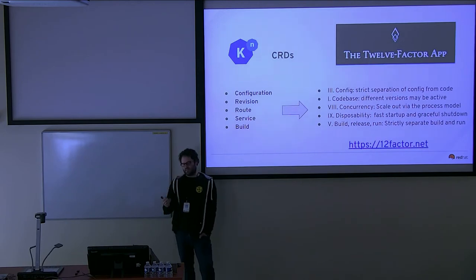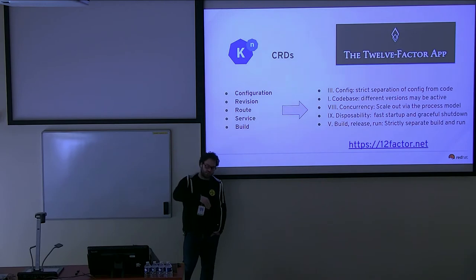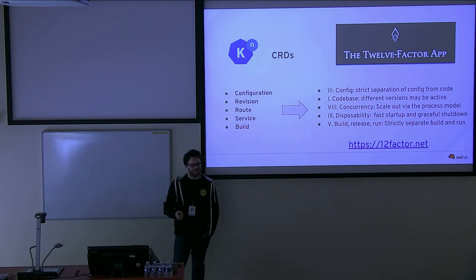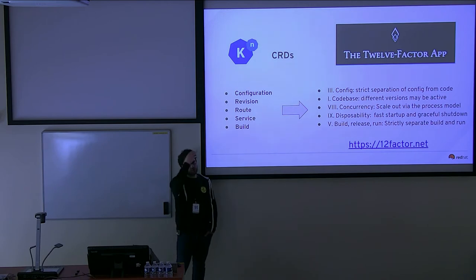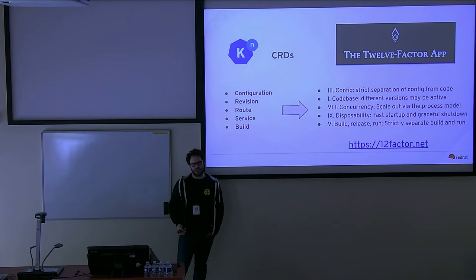What's interesting about all the K-native CRDs is that they map one-to-one with some of the 12-factor principles. As many of you know, the 12-factor principles on 12factor.net are the way to develop cloud-native applications. There is a one-to-one pointer — for example, the idea of having the configuration strictly separated from the code is something very well implemented in K-native.